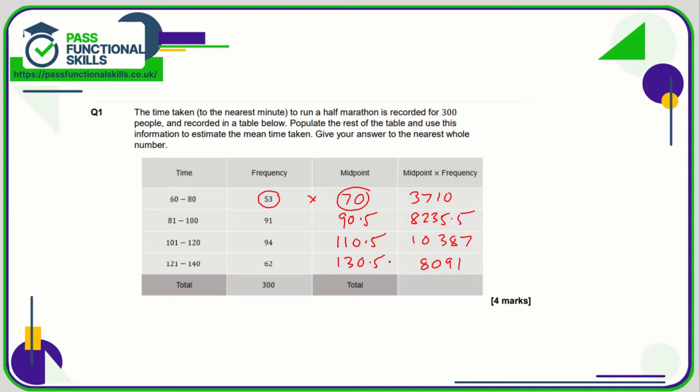Now it's all very well just checking these numbers in, but do you understand what's going on here? So what we know is that we are looking at some people who did a half marathon, and we know that 53 people ran between 60 and 80 minutes. Now we don't know exactly what their times were, somewhere between 60 and 80.